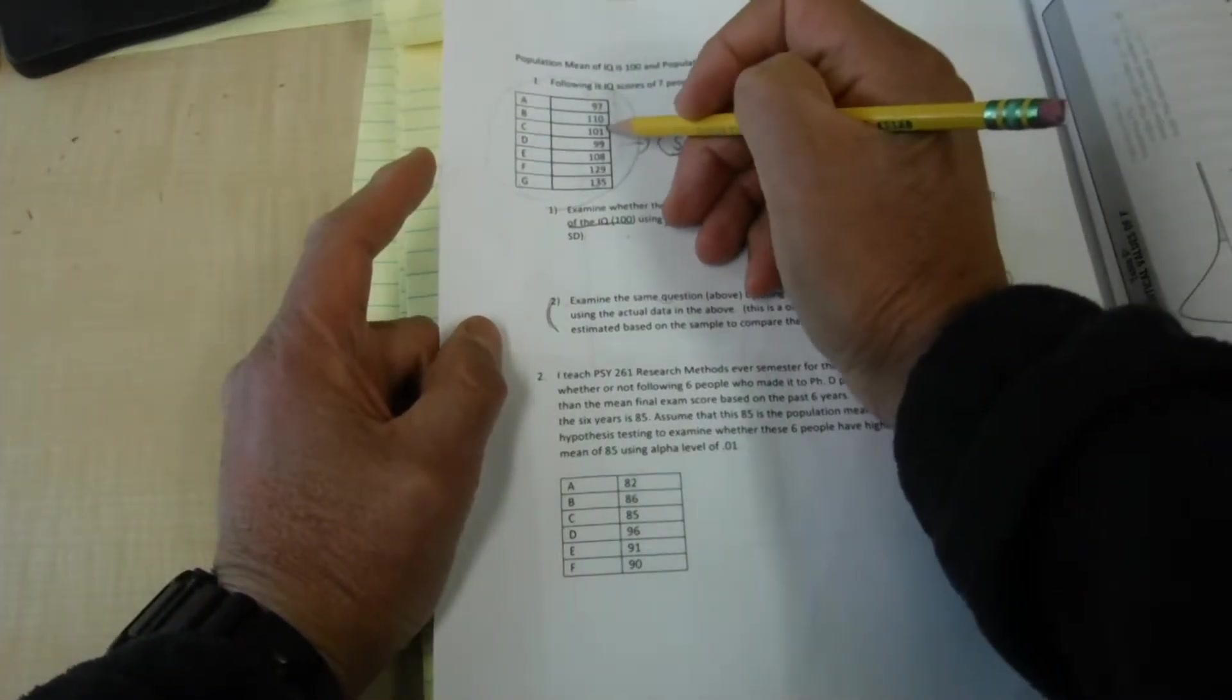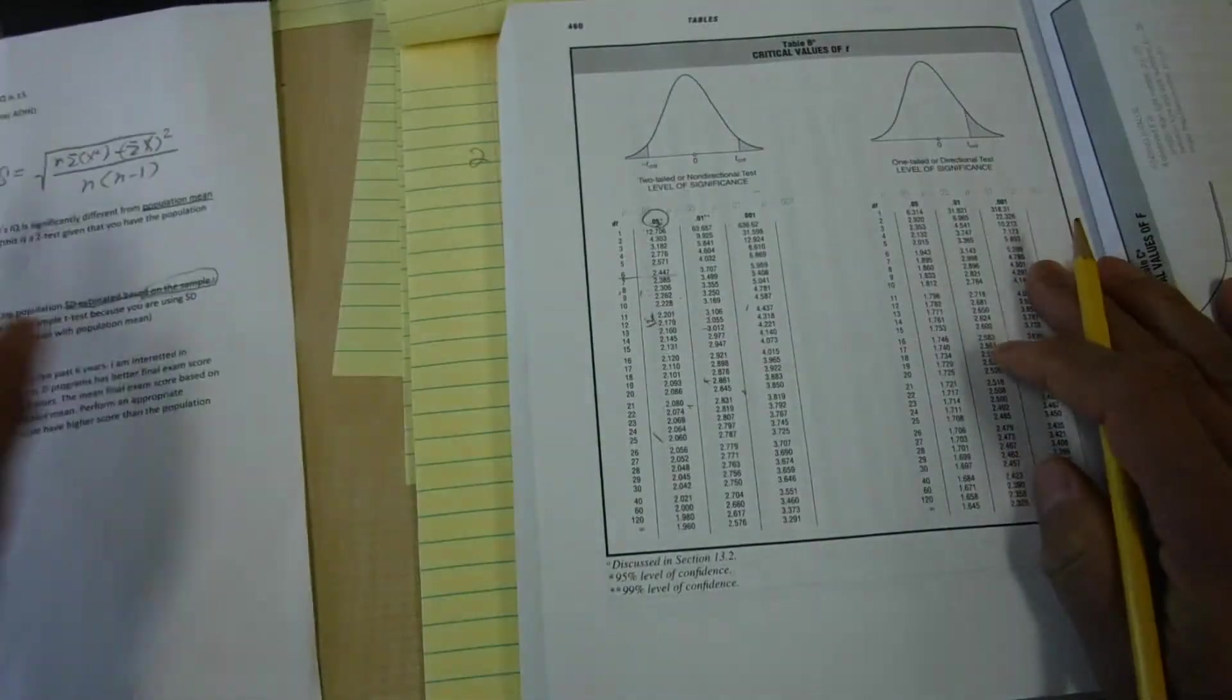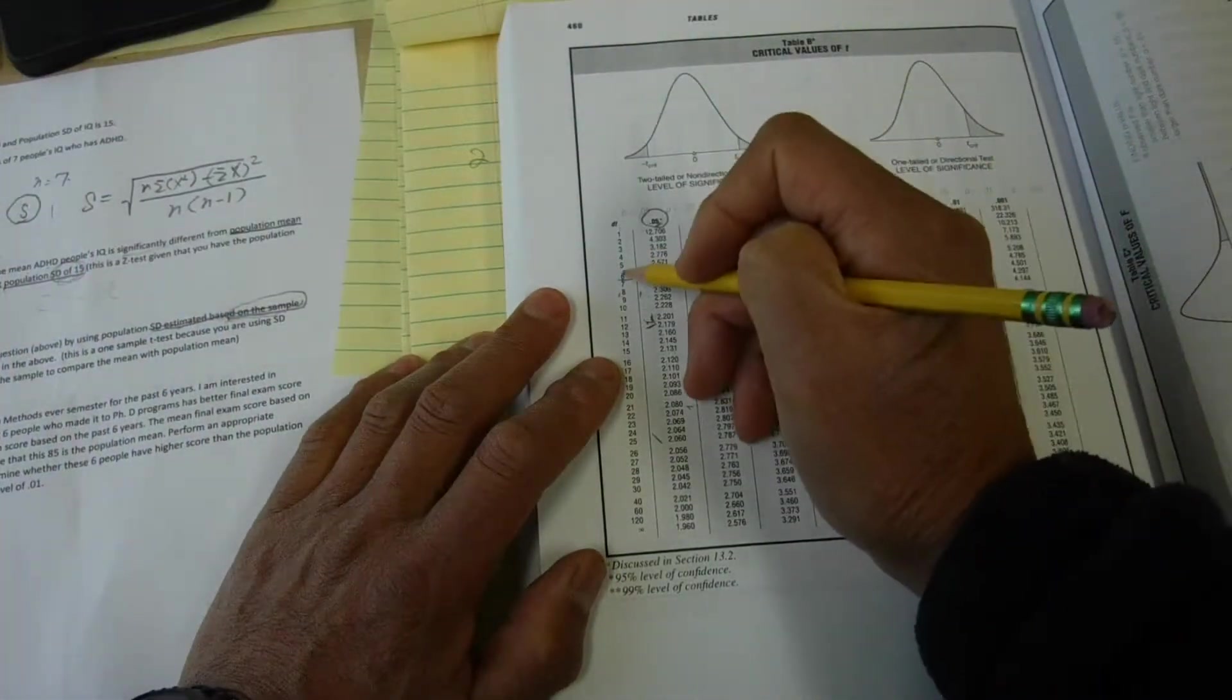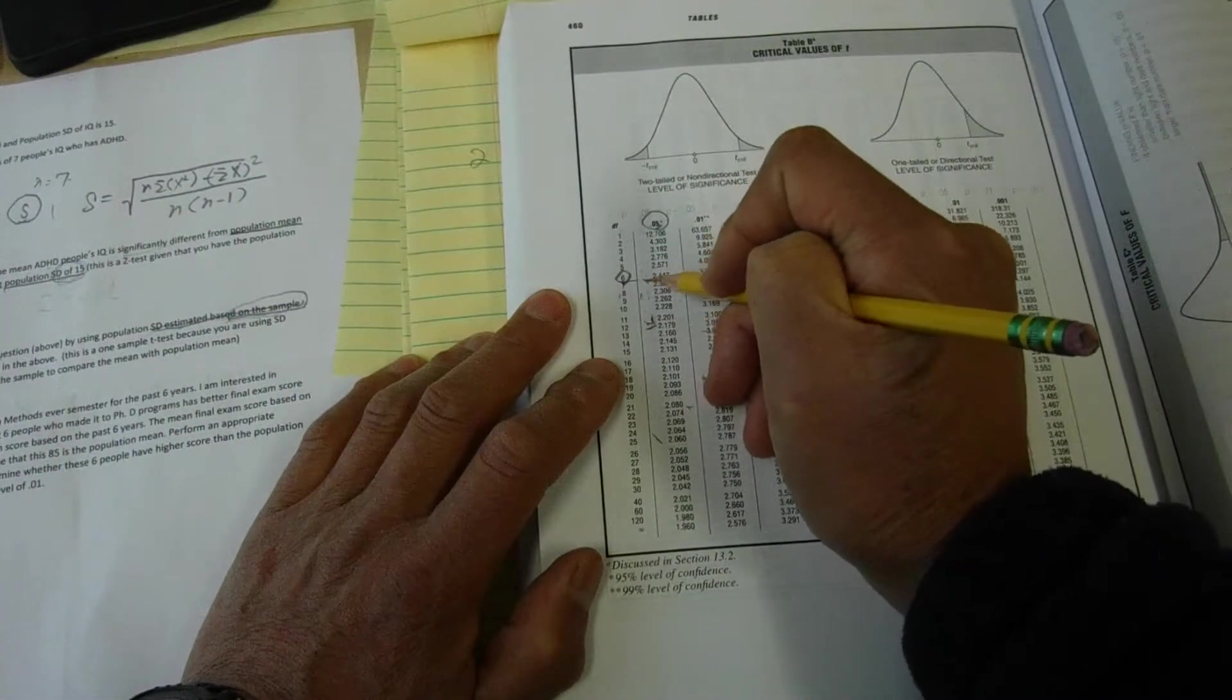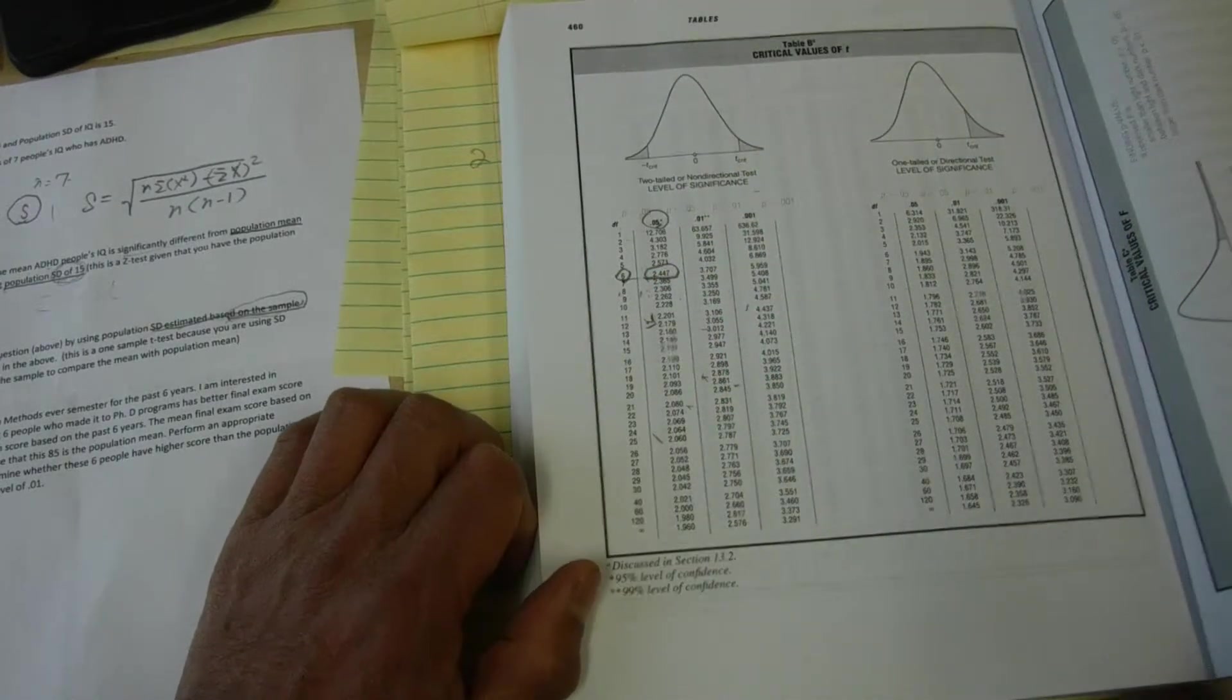And the sample size is 1, 2, 3, 4, 5, 6, 7. Therefore, 7 minus 1, that's degrees of freedom, is 6. Therefore, t-critical is 2.447. So you are going to write t-critical equal 2.447.